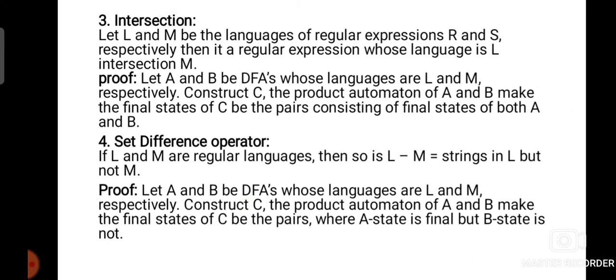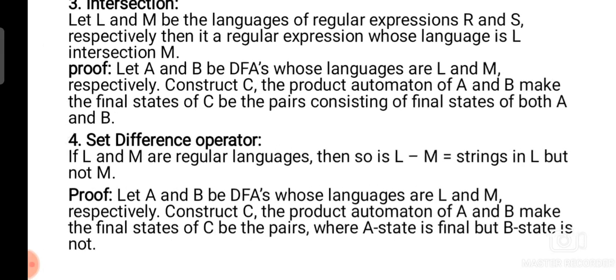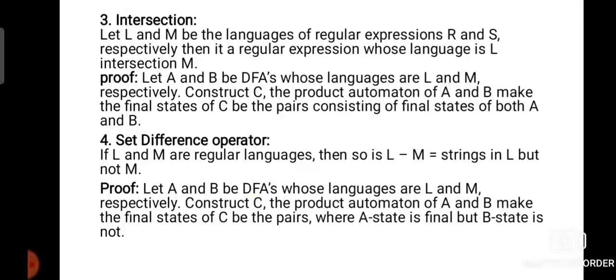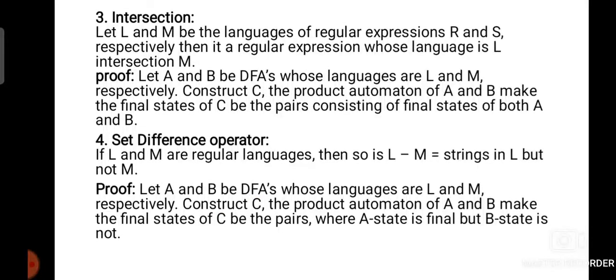Proof: Let A and B be two DFA systems whose languages are L and M respectively. When we construct C, the product automaton of A and B, we make the final states of C be the pairs consisting of final states of both A and B. So intersection is closed under regular languages.